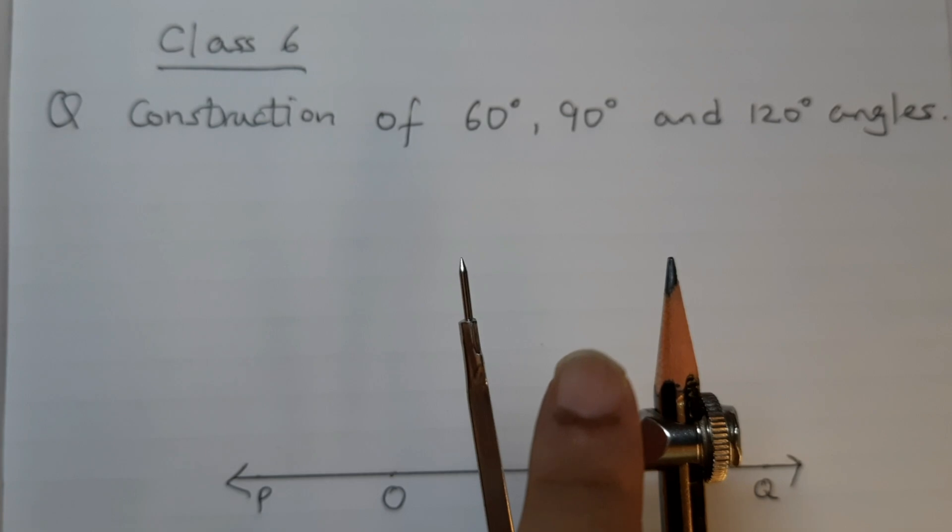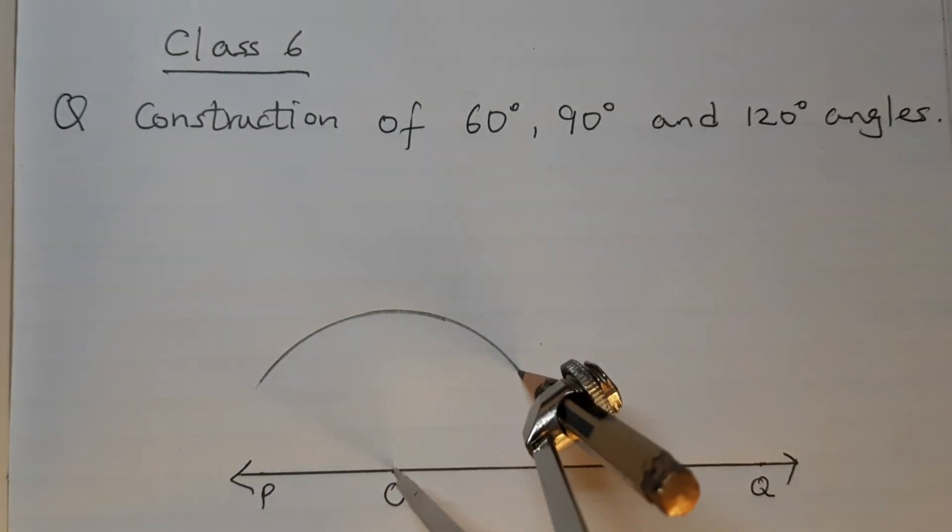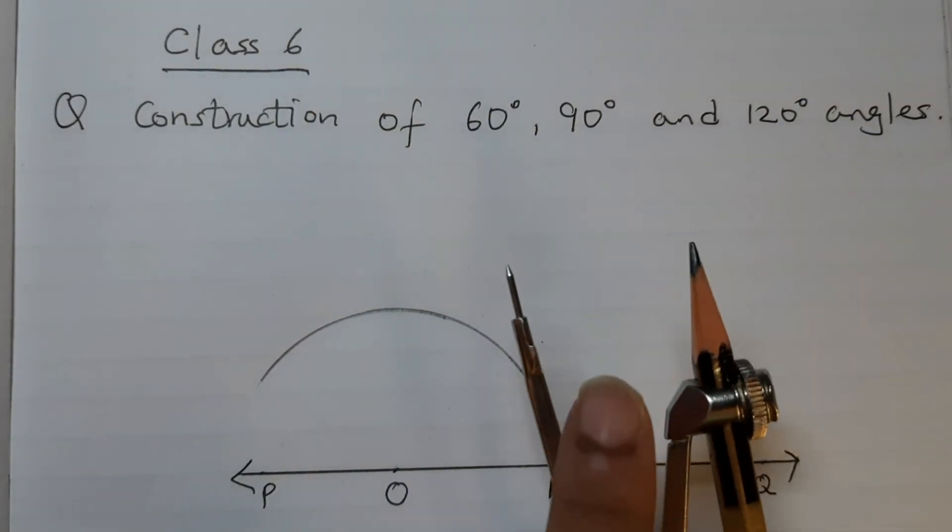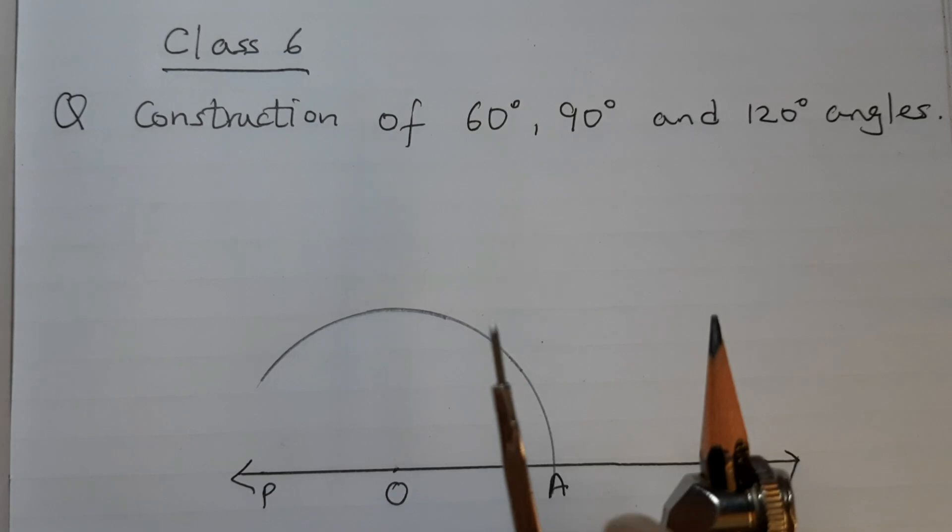I have taken this much radius, you can take any radius. This is A. With the same radius on the compass, do not disturb the radius. Take the same radius.